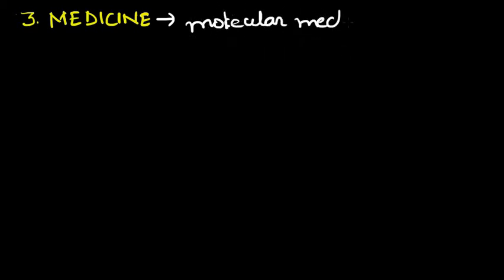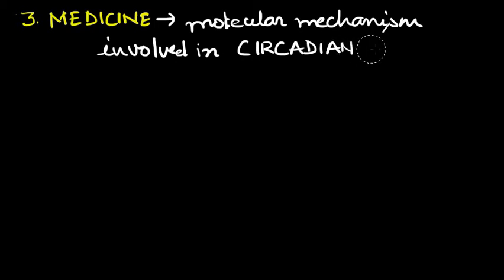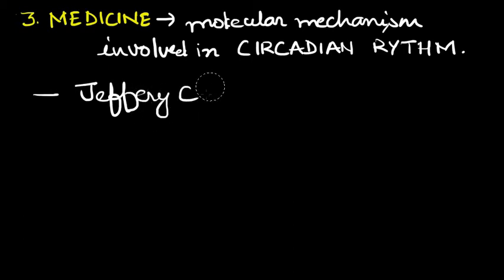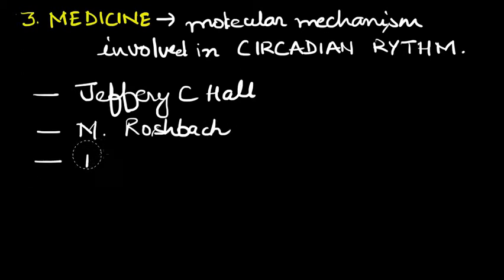Third field for which this Nobel Prize is given is medicine. And in medicine, this prize was given for molecular mechanism involved in circadian rhythm. And this prize was given again to three people: Jeffrey C. Hall, Michael Rosbash, and Michael W. Young.